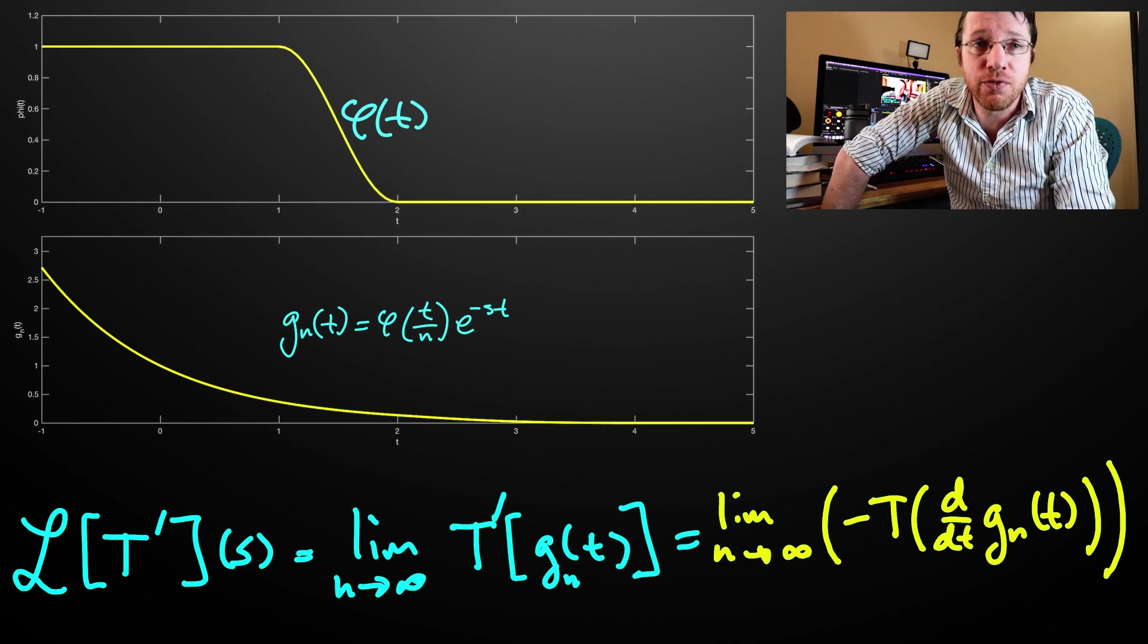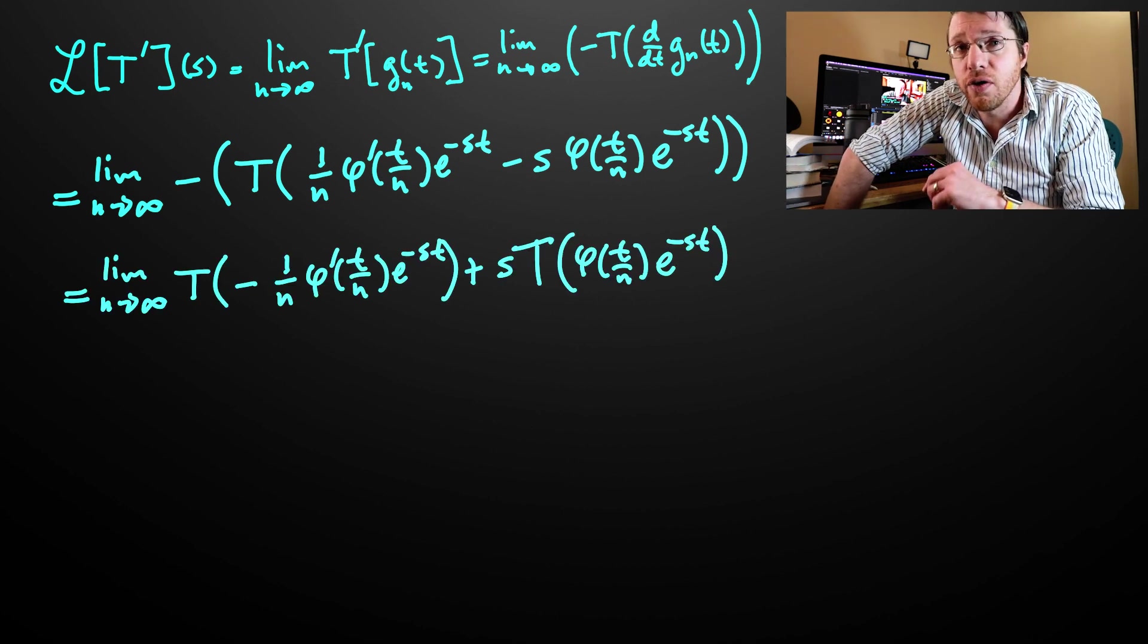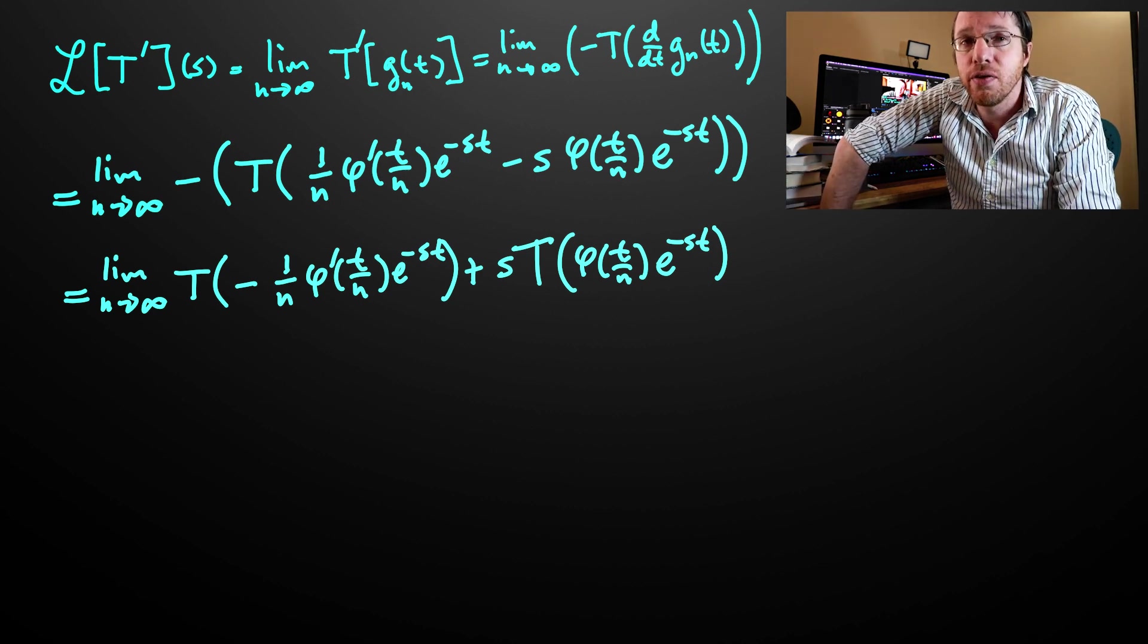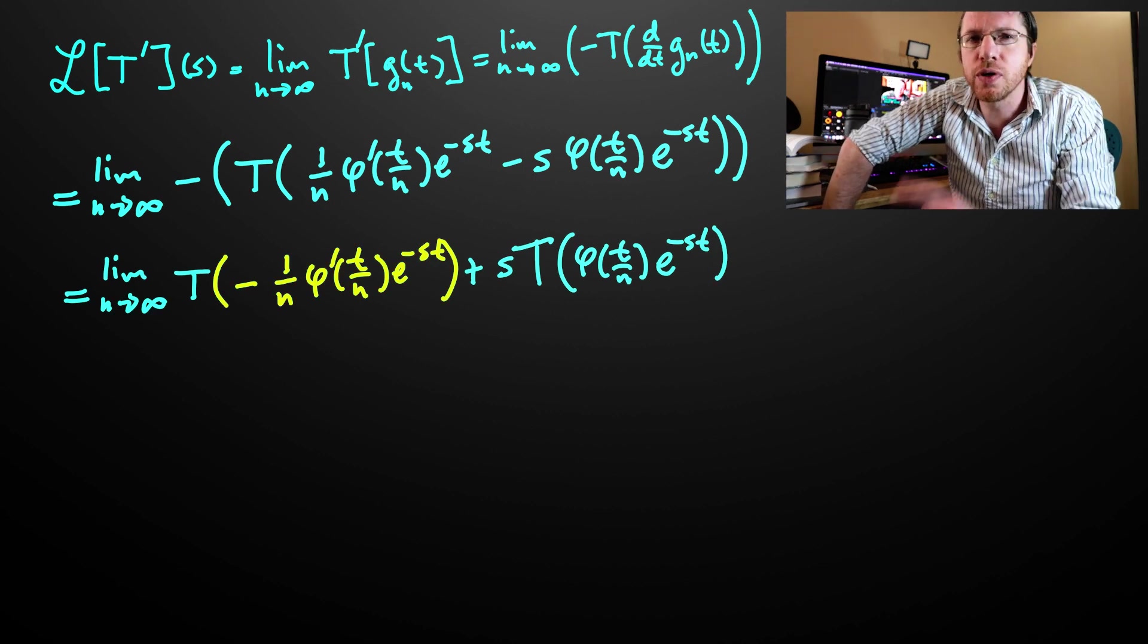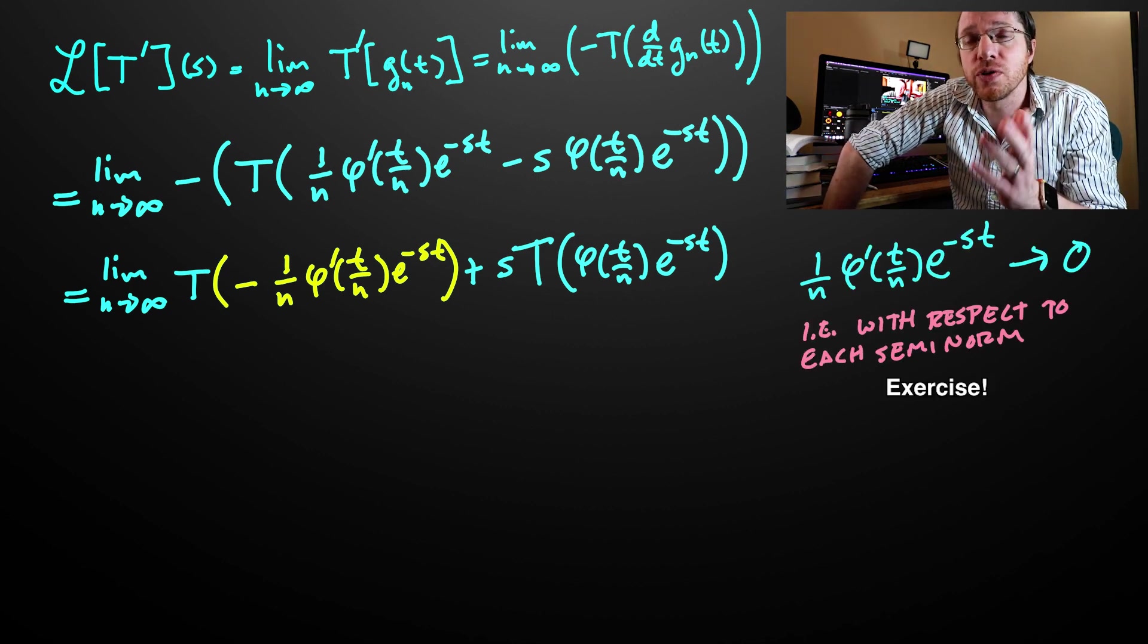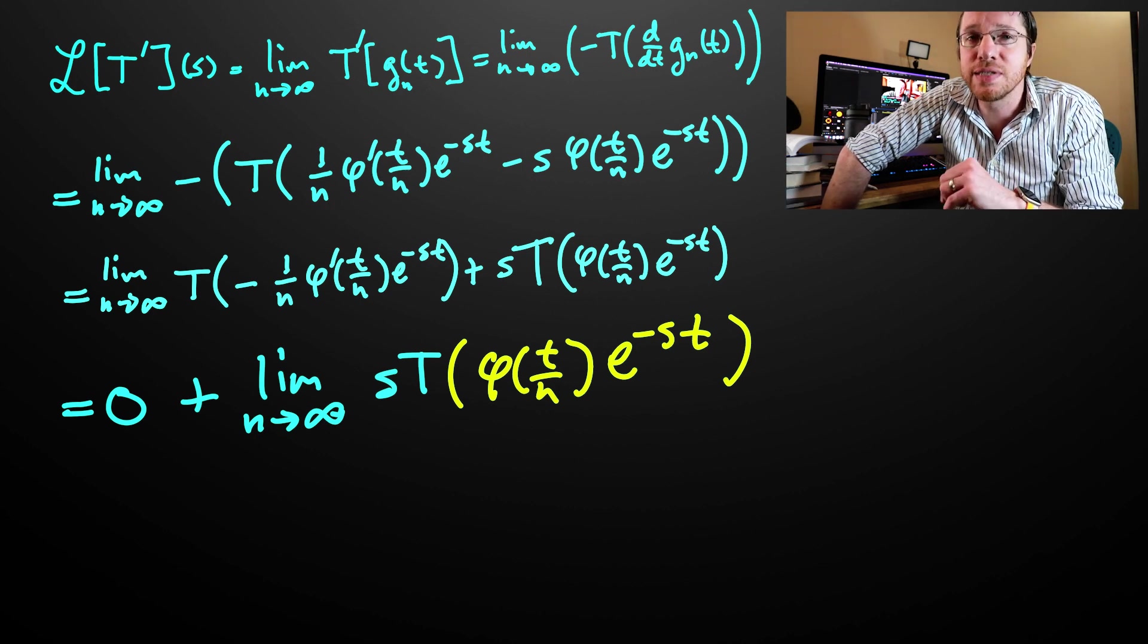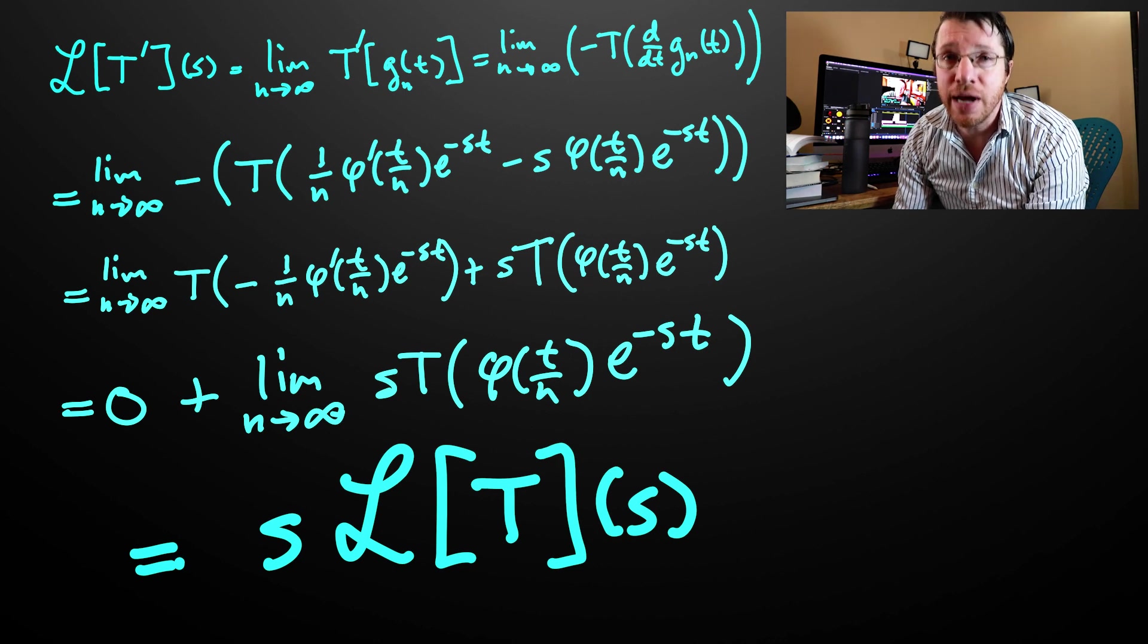Now g_n is expressed as a product of differentiable functions. We can use the product rule and we get t of negative 1 over n times phi prime of t divided by n times e to the minus st plus s times phi of t divided by n times e to the minus st. The inside of the first term goes to zero in L, which is a nice little exercise to go through. And by continuity, that whole first term then goes to zero. And the second term on the inside is going to be g_n. So that gives us s times t of g_n.